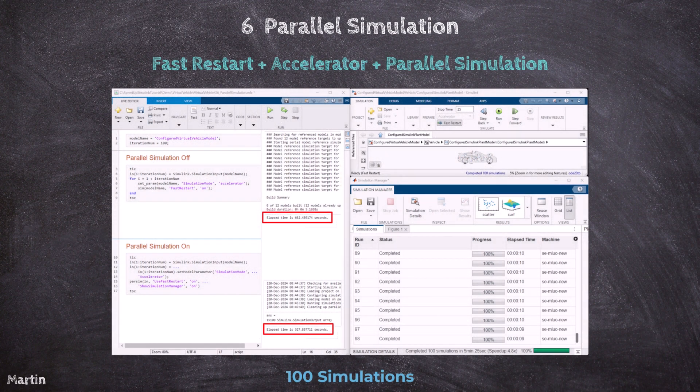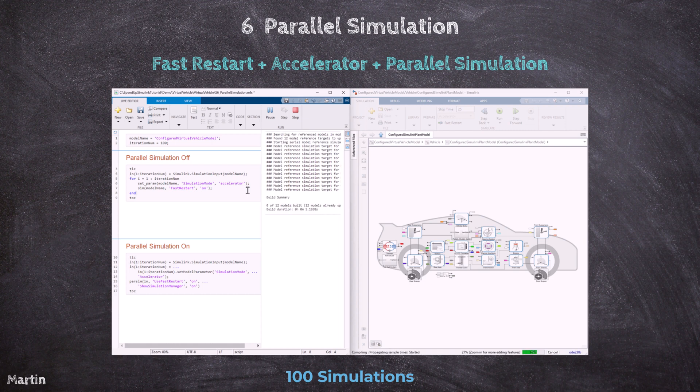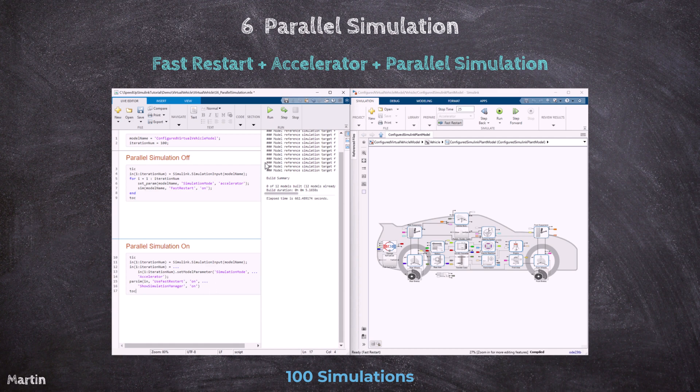Let's do another experiment where we will use the same model and configurations as before, but increase the number of simulations from 50 to 100. This will help us understand how the performance scales with a larger workload. It is expected that the relative performance gain with 100 parallel simulations should improve, because the worker setup time and communication overhead become less significant as the workload increases, leading to better scalability.